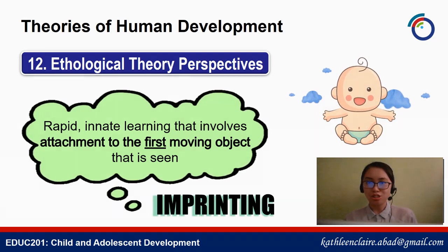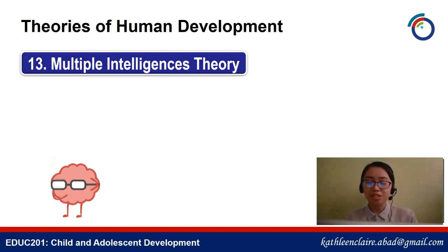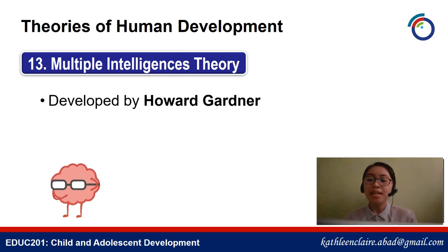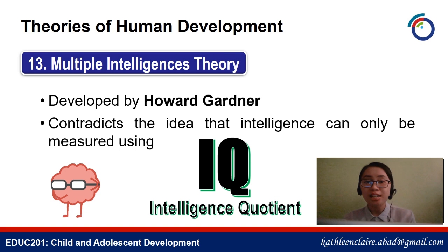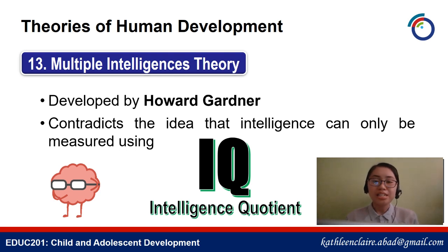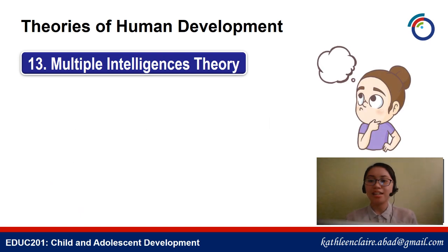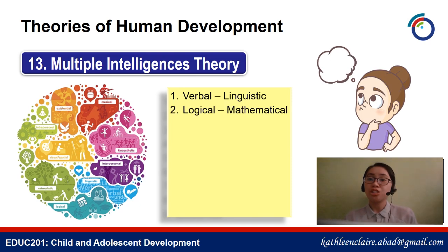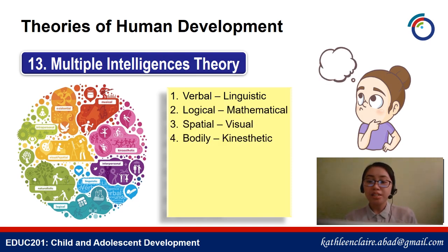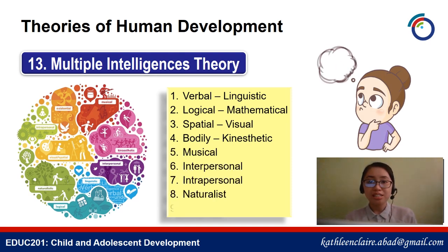And last is the multiple intelligences theory, developed by Howard Gardner. This contradicts the idea that intelligence can only be measured using IQ. Gardner wanted to show that people have different kinds of intelligence — it's not just bookish intelligence. He proposed nine intelligences: verbal-linguistic, logical-mathematical, spatial-visual, bodily-kinesthetic, musical, interpersonal, intrapersonal, naturalist, and existential.